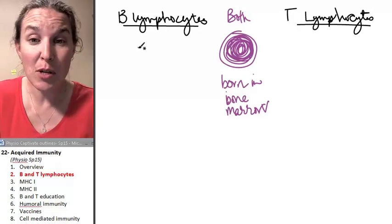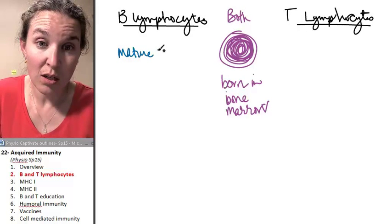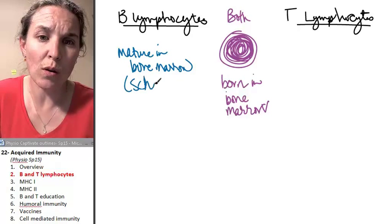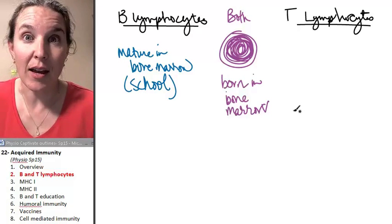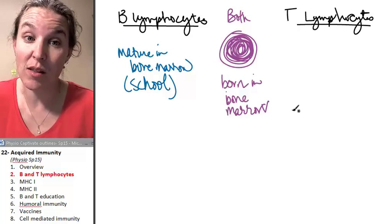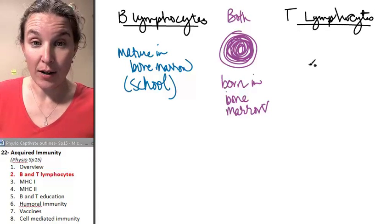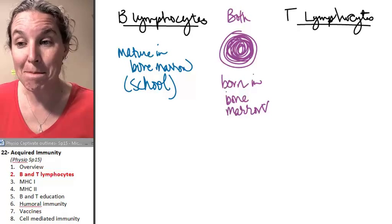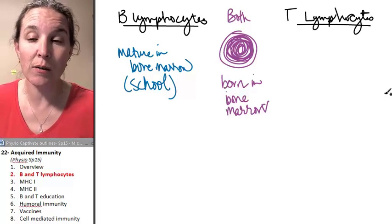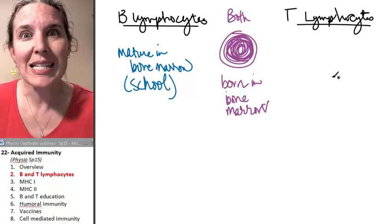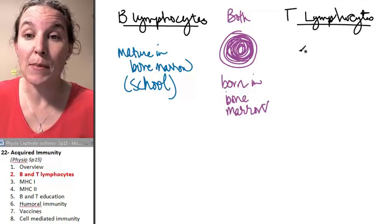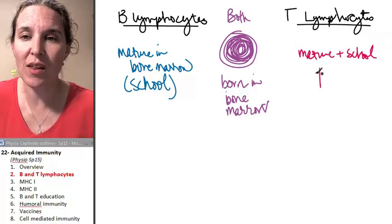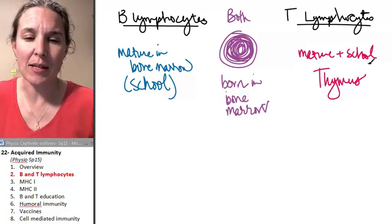Let's talk about where they mature. B lymphocytes mature in the bone marrow, and this is where they go to school. We're going to talk about their school later on in the lecture. T lymphocytes, it's easy to remember actually. B lymphocytes go to school in the bone marrow. We know everybody was born in the bone marrow. T lymphocytes go to school, mature and go to school in something that starts with a T, in the thymus.